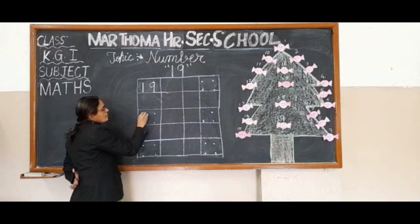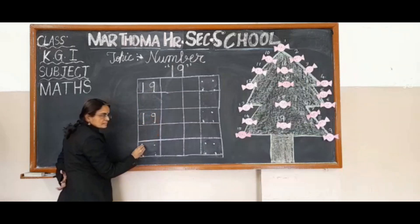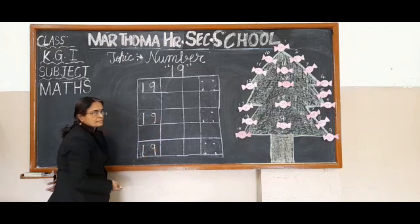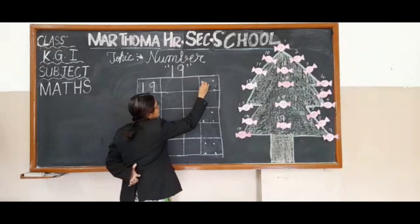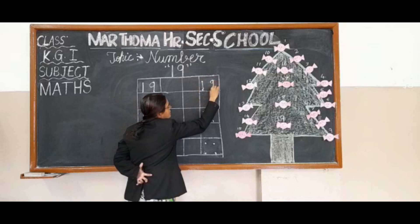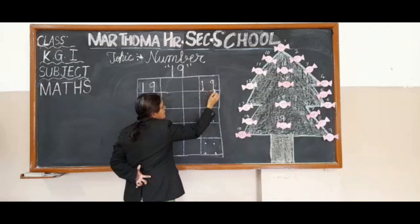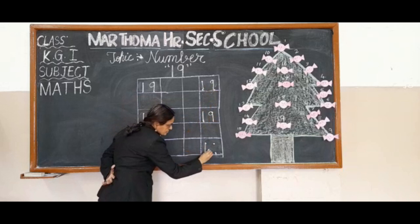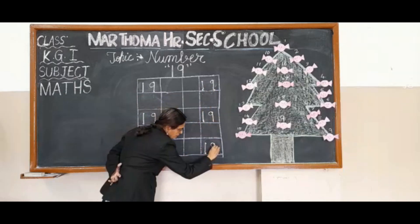Again repeat it. One, nine, 19. Repeat it again. One, nine, 19. Again repeat it. One, nine, 19.